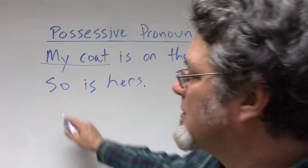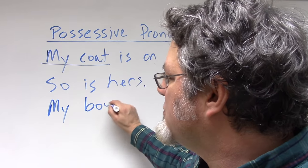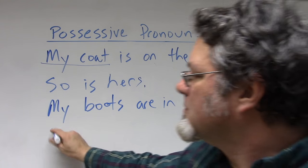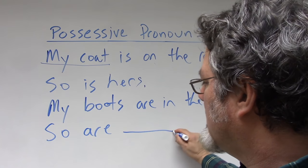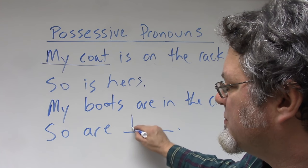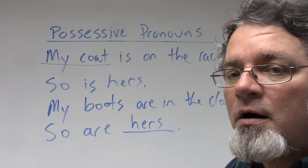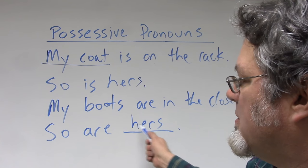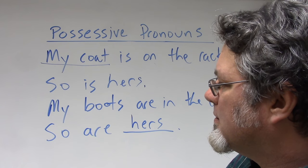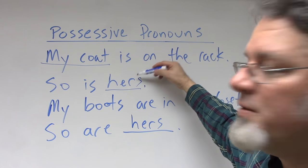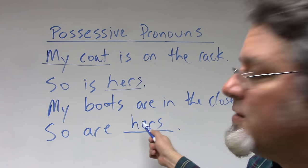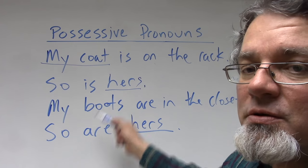Let's try a different sentence: 'My boots are in the closet. So are hers.' I'm thinking about the boots, so I use 'hers' — which represents 'her boots.' That's why I'm using the verb 'are.' In the previous example, 'hers' was regarded as singular (thinking about one coat), but in this case it's plural — thinking about two boots.